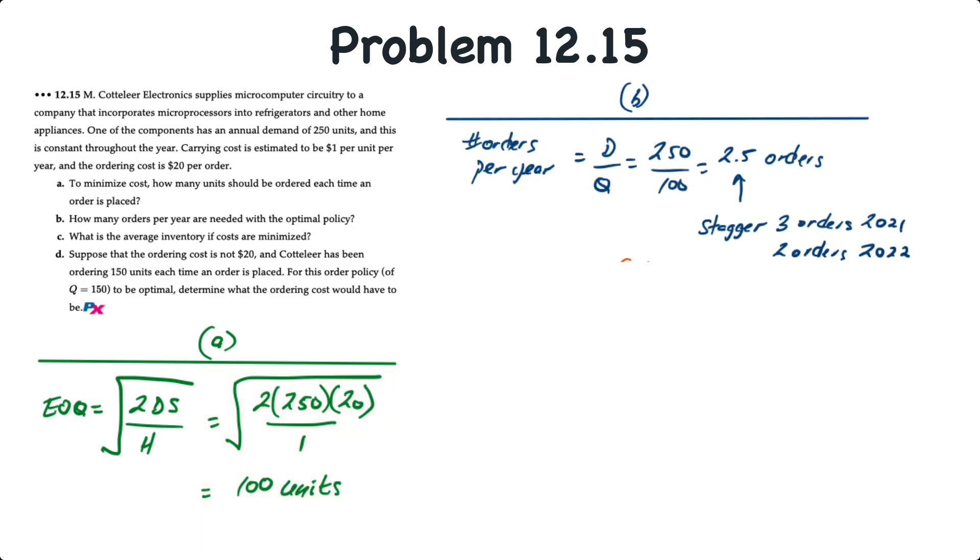B, the number of orders per year is simply equal to the annual demand D divided by the economic order quantity Q. That's equal to 250 divided by 100, or 2.5 orders per year. Now, of course, you can't have two and a half orders per year, so you would stagger the ordering and say have three orders in 2021 and two orders in 2022. For requirement C, to determine the average inventory, that's simply Q over 2. So 100 over 2 is 50 units.